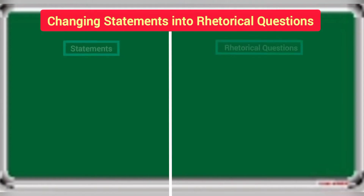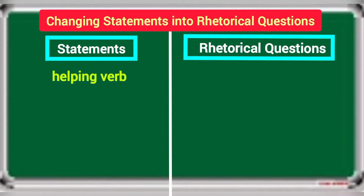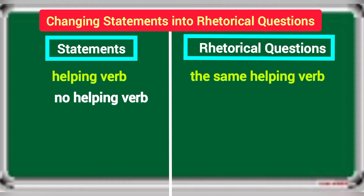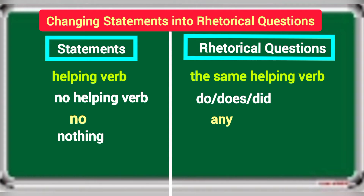Note that if there is a helping verb in the statement, use that helping verb while changing the statement into a rhetorical question. If there is no helping verb, you have to use do, does, or did according to the tense of the sentence. If there is 'no' in the statement, use 'any' in the question. If there is 'nothing', use 'anything'. For 'never', use 'ever'. Let us start the test.